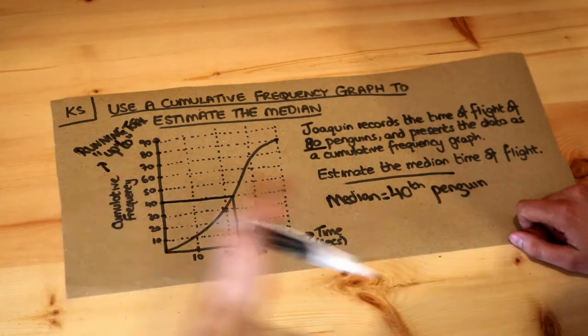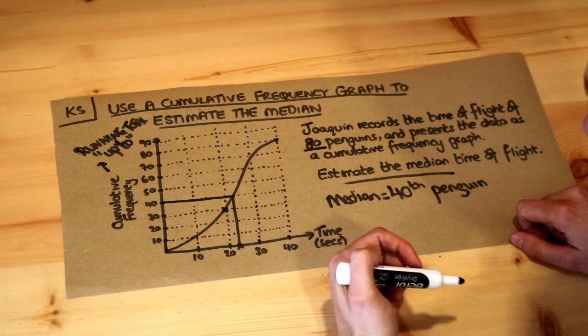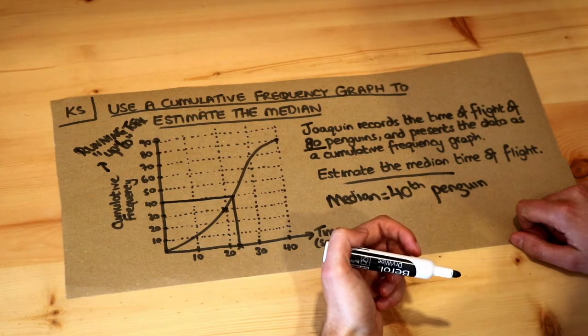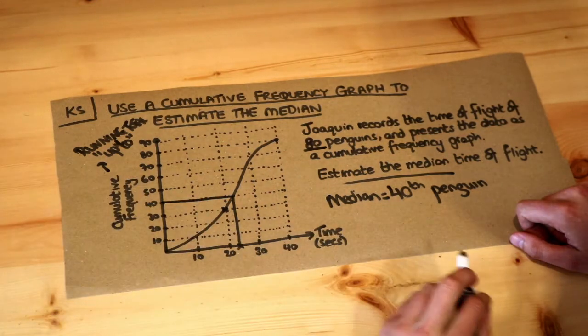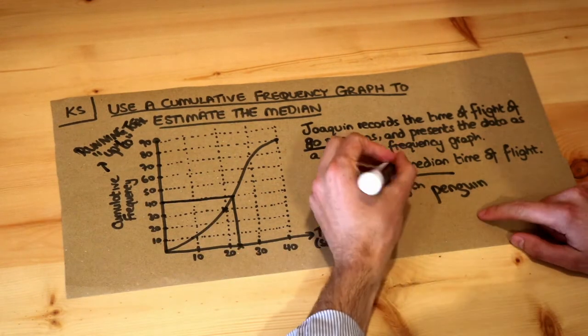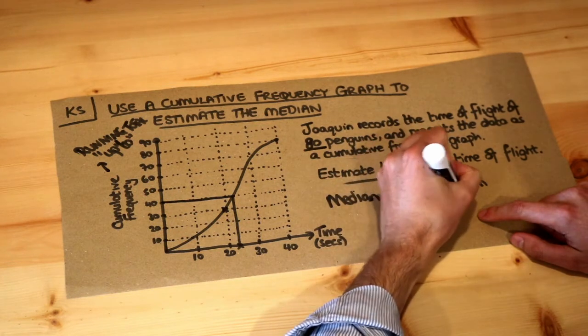Well, if 40 penguins had a time of lower than 23 seconds or including that value, then that must be the median because half the penguins, 40 penguins, are below us, and therefore this value here of 23 seconds is going to be the median.